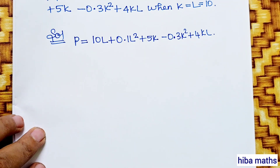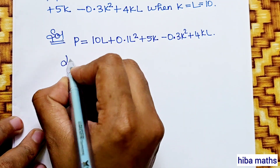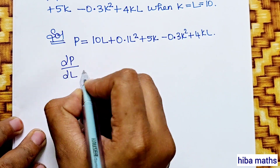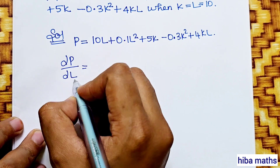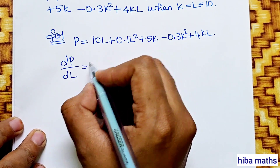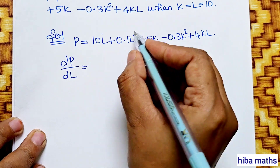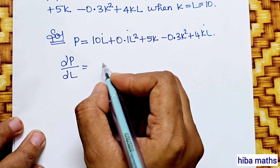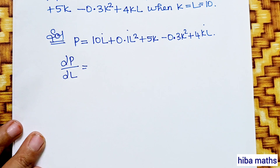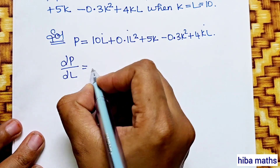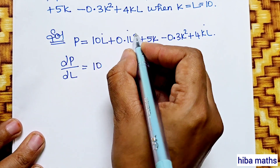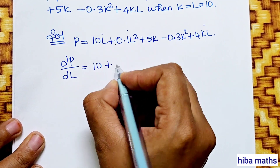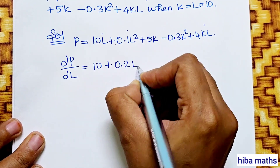We can do this: doh P by doh L — partial differentiation of P with respect to L. Note the terms with L: L and L square. Differentiate them. L gives 1, L square gives 2L. So 0.1 into 2 gives 0.2L. The result is 10 plus 0.2L plus 4K.